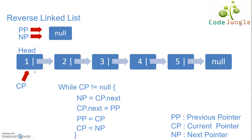Here is the linked list and we take three pointers: the previous pointer, next pointer, and current pointer. Initially, the previous pointer and the next pointer are null and the current pointer points to the head node.